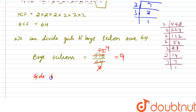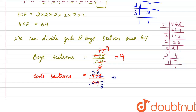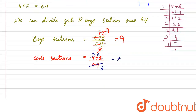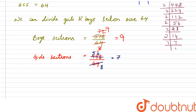Now for girls' sections: 448 ÷ 64 = 7. So we get 7 girls' sections and 9 boys' sections.